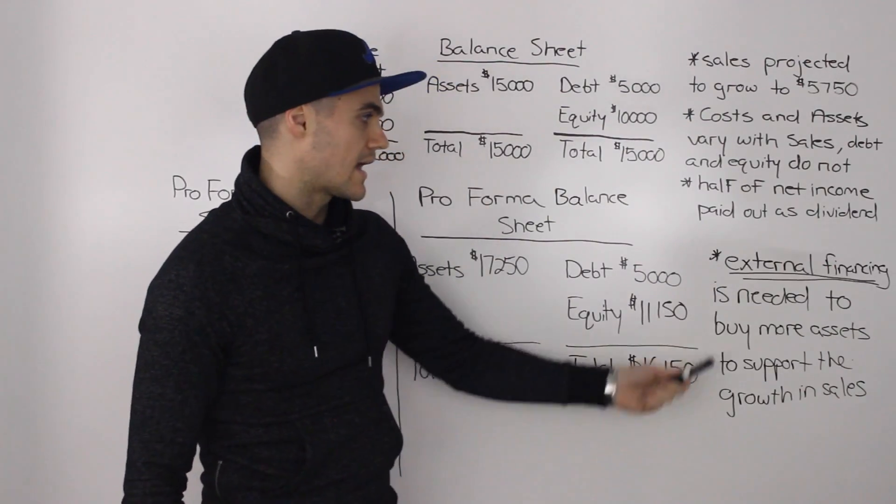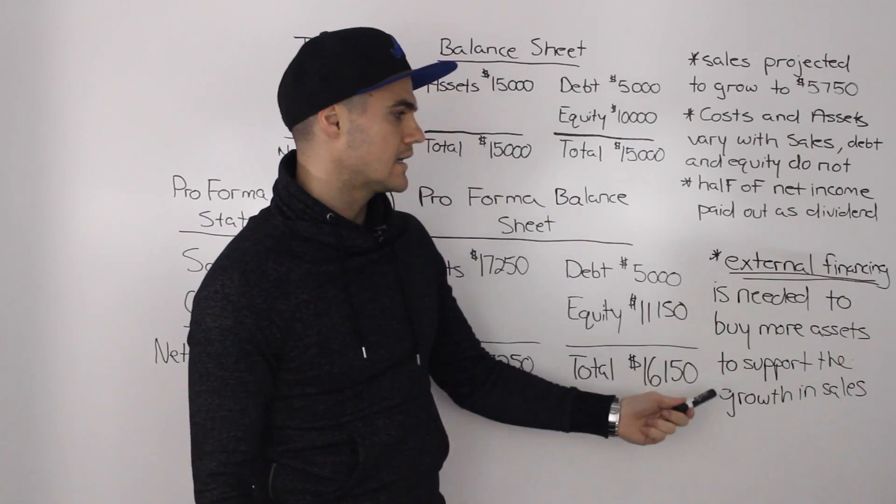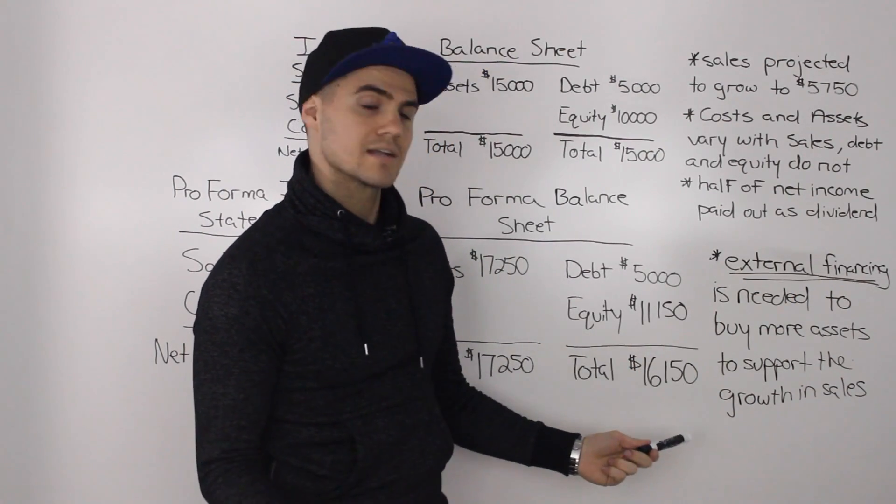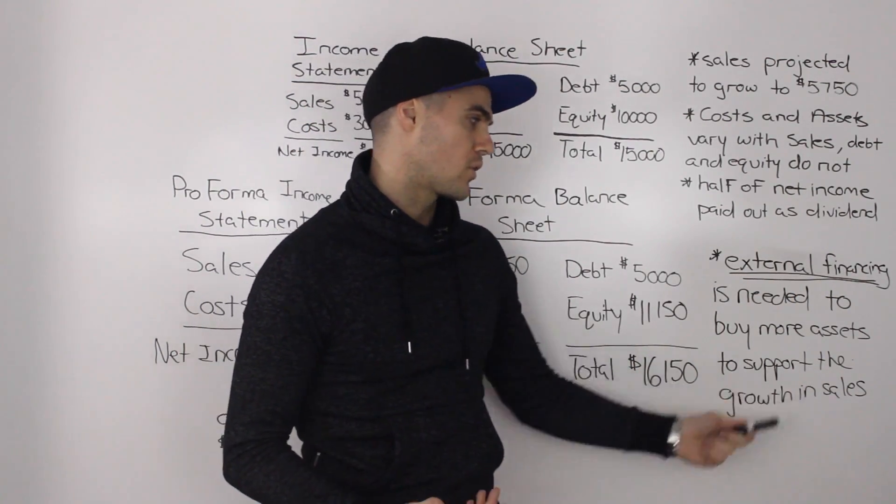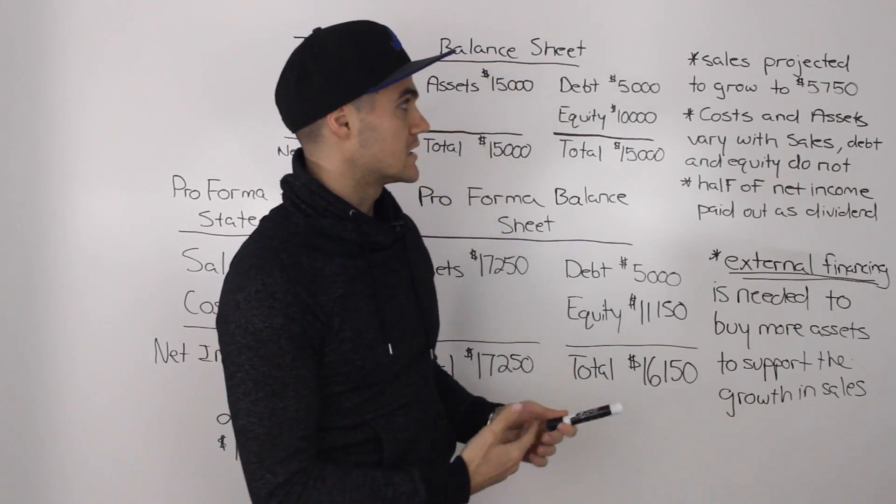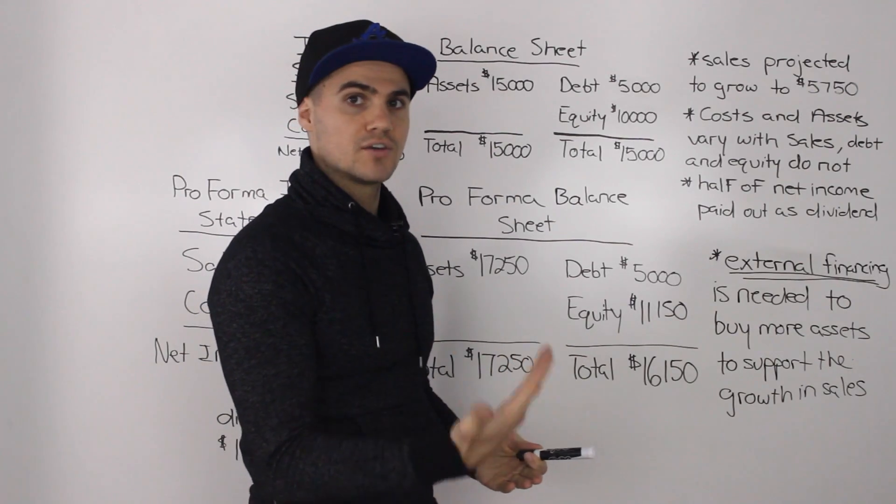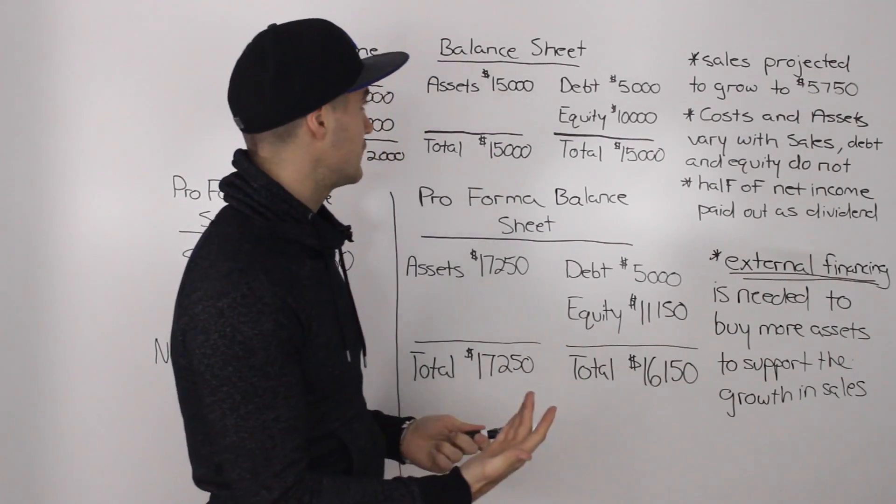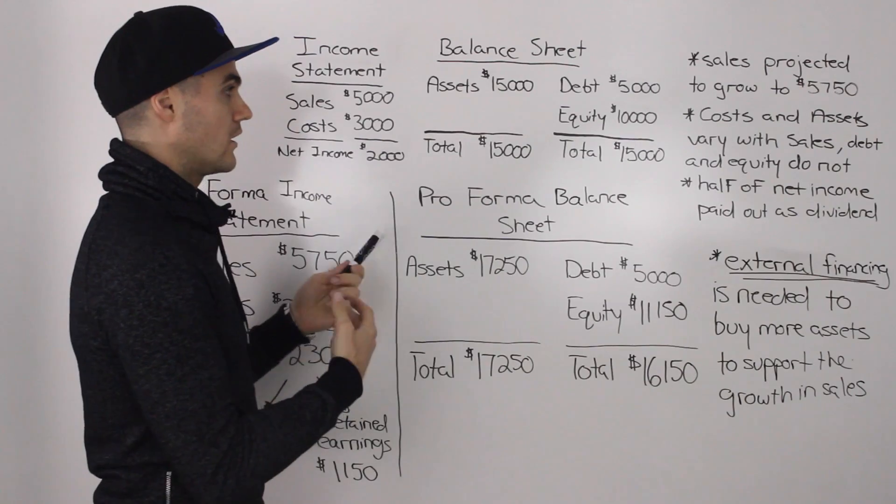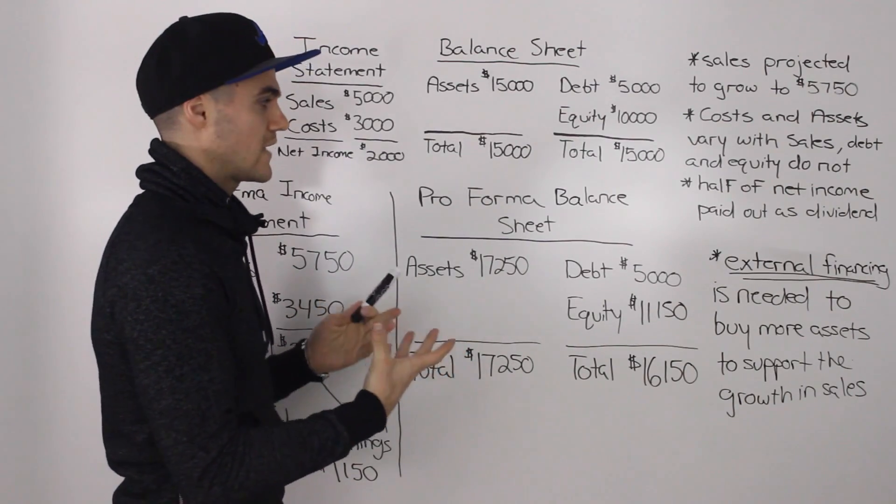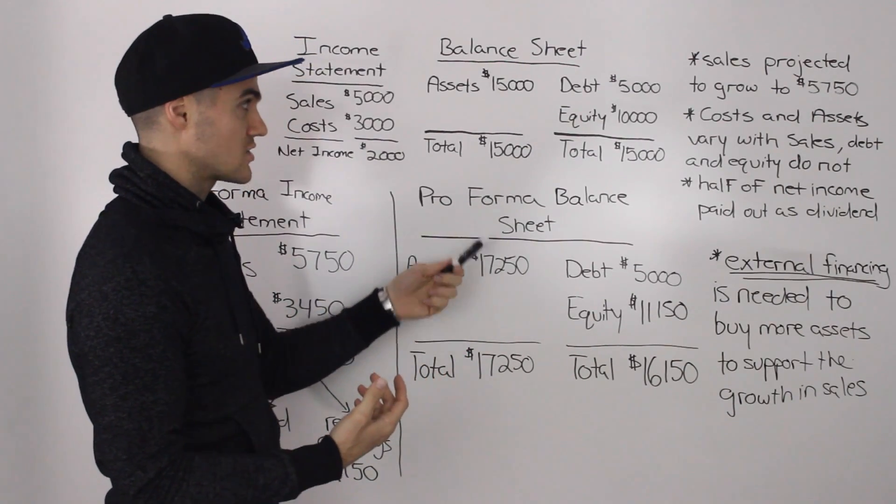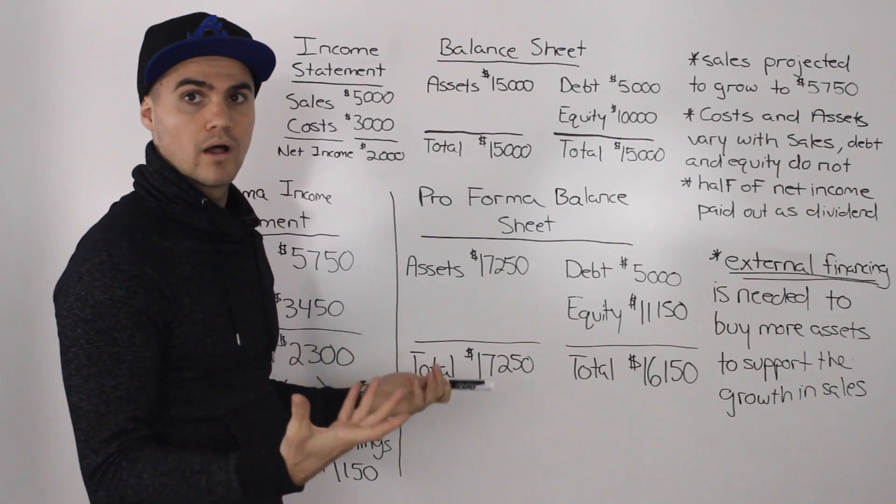And the answer is that external financing is needed to buy more assets to support the growth in sales because the sales are growing to $5,750. They're increasing by 15% from $5,000. Well, to support that growth in sales, we have to buy more assets or assets are going to increase.